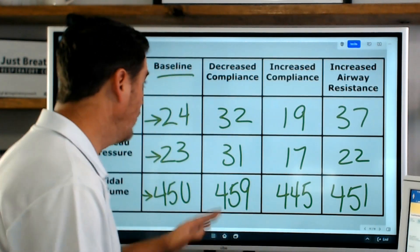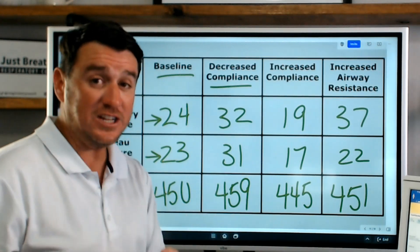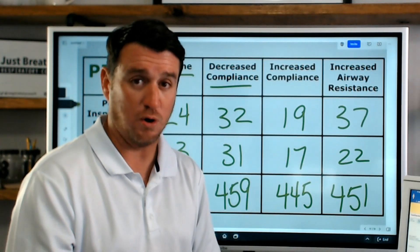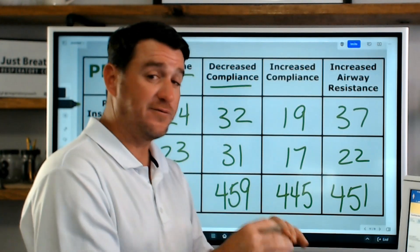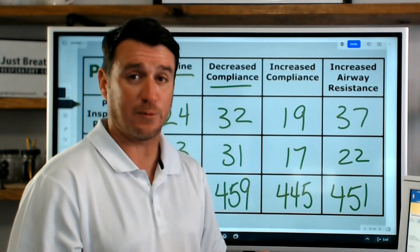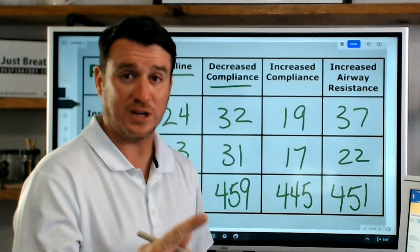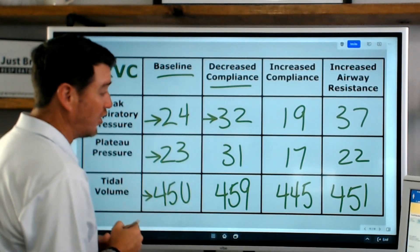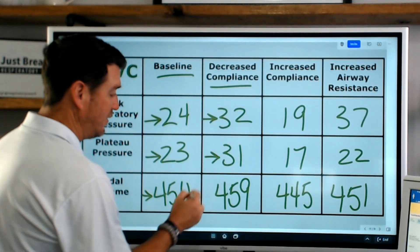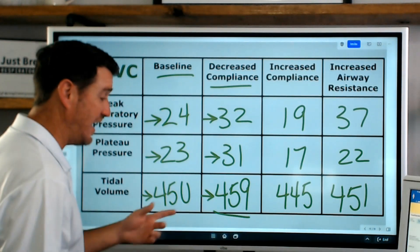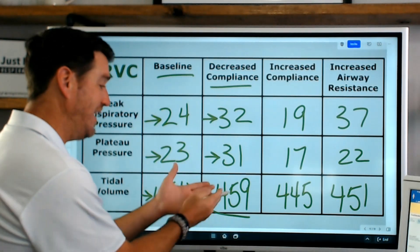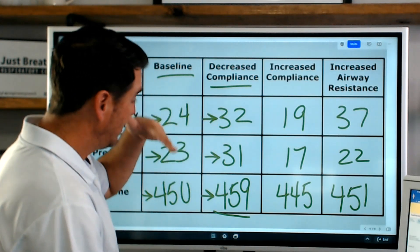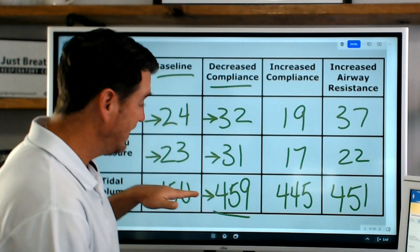So we decreased the compliance. Initially, tidal volume went down, just like in pressure control, which is what's going to happen. But you saw the ventilator go, wait, I got to give a little bit more pressure, and it kept increasing the pressure. It ended up peaking out at 32, a plateau of 31 with a delivered tidal volume of 459. Our target was 450. That's in the ballpark. The ventilator said, cool, this is the pressure that is needed to deliver that tidal volume.